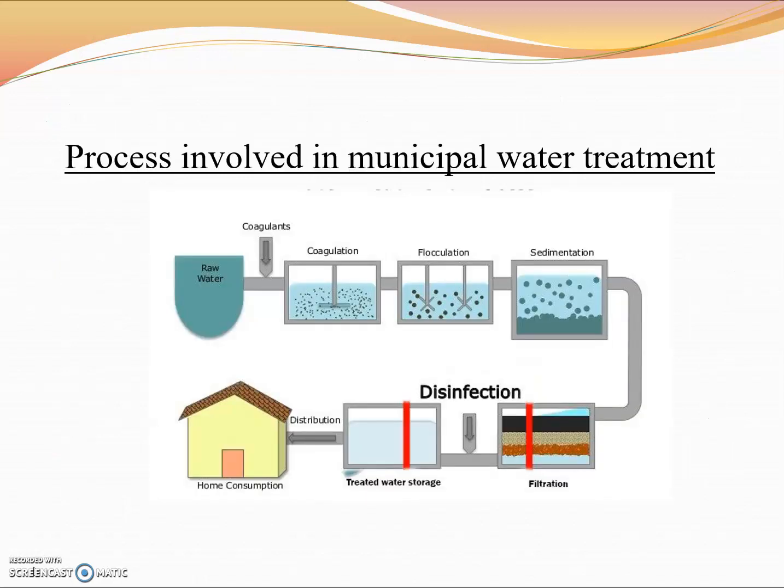Let us have a discussion regarding the process involved in municipal water treatment in a flowchart. This is from raw water where we are going to start the purification process. If the material contains a lot of fine colloidal materials, then it's better to treat the water with coagulants. After treating with coagulants you have to agitate to form clusters of solid materials, and then flocculation process.